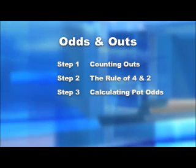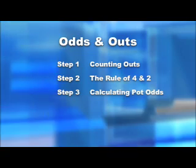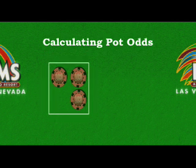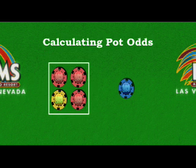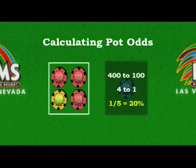Step three: calculating pot odds. After figuring out my chances of winning by using the rule of four and two, I have to calculate the pot odds to make winning decisions. Suppose the pot has three hundred dollars in it and my opponent bets one hundred. Now the pot contains four hundred dollars. I'm being asked to call one hundred dollars to win four hundred. My pot odds are four hundred to one hundred, or simplifying that, four to one. If I call a hundred dollars, my hundred dollar chip will represent one-fifth, or twenty percent of the pot. So I need a twenty percent chance to win to justify calling.